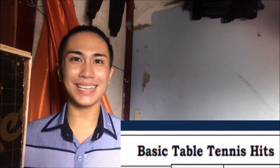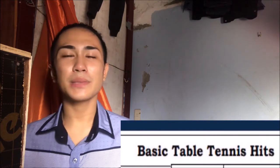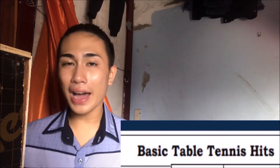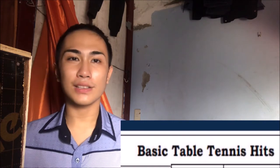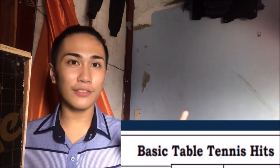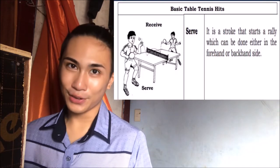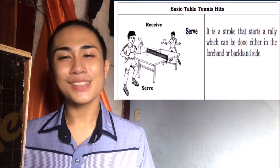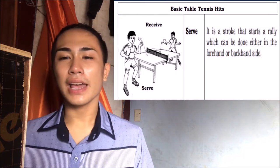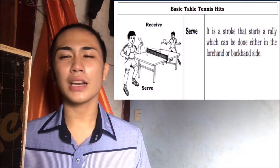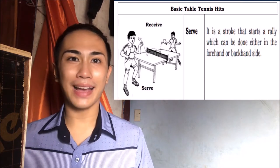Now let us proceed to our main discussion: the basic hits in table tennis. These basic hits have five fundamentals or categories: the serve, receive, push, drive, and block. The serve is a stroke that starts a rally, which can be done either on the forehand or backhand side.